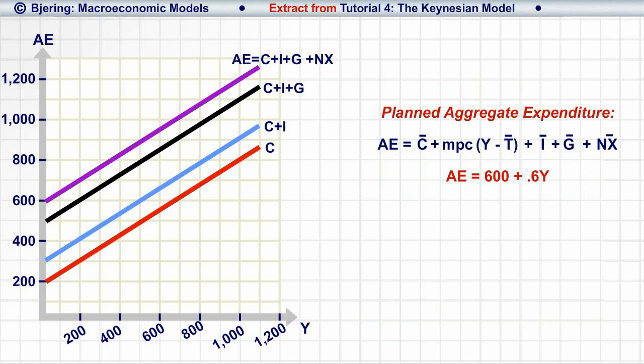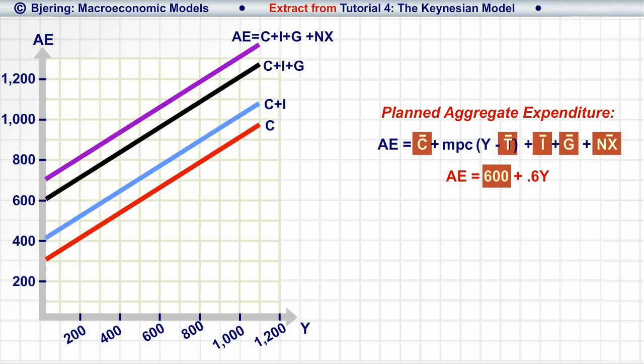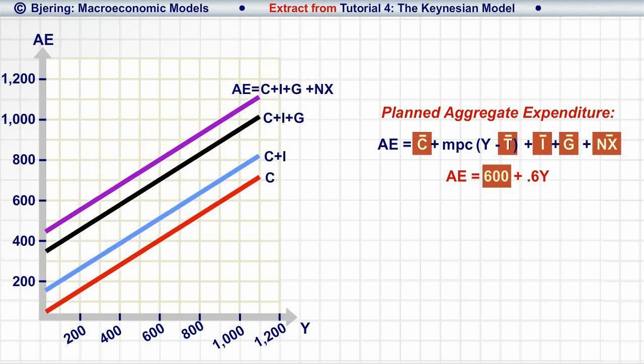Notice that the intercept of the AE line is determined by the exogenous parameters of the planned aggregate expenditure model, increasing or decreasing as they increase or decrease.